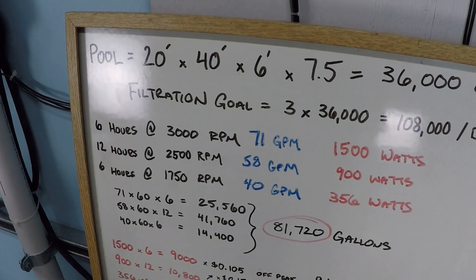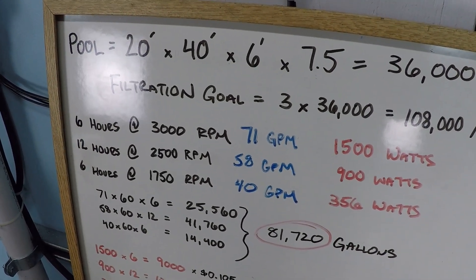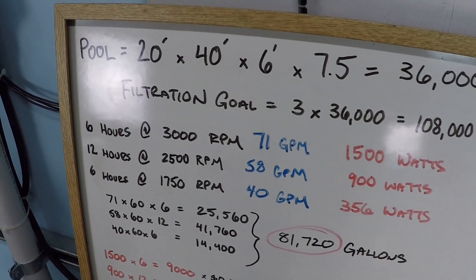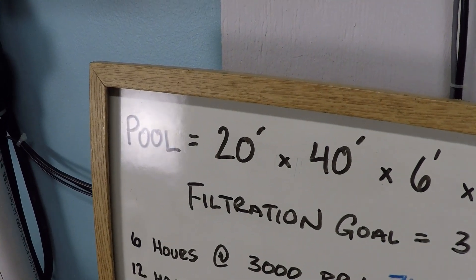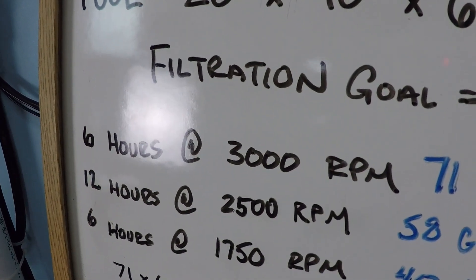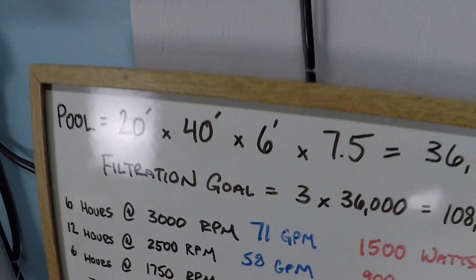So that's important right there because we've identified a situation where a variable speed pump is not providing value here. Truly the problem is the pool is not built correctly. 20 by 40 pool needs to have bigger plumbing, it needs to have a better power supply for the pump so that you can get more gallons per minute out of it, and that's the truth.